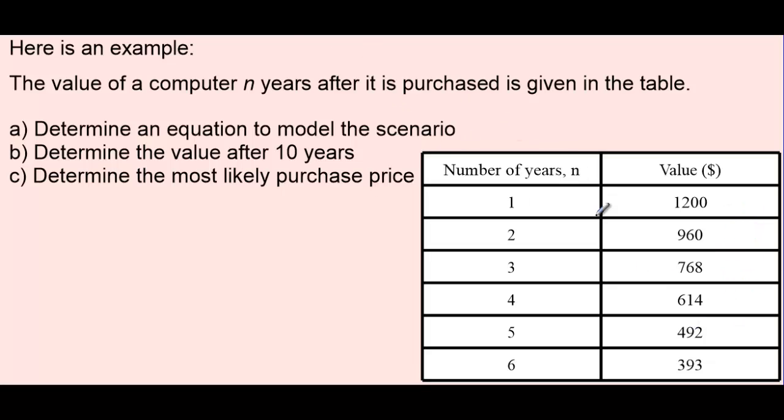In order for it to be a quadratic model, our model would have to have the same second differences. So if we took the first differences of all of our values and then took the first differences of the first differences, which we call the second differences, they would all need to be the same. But that's not going to work for this table of values either.